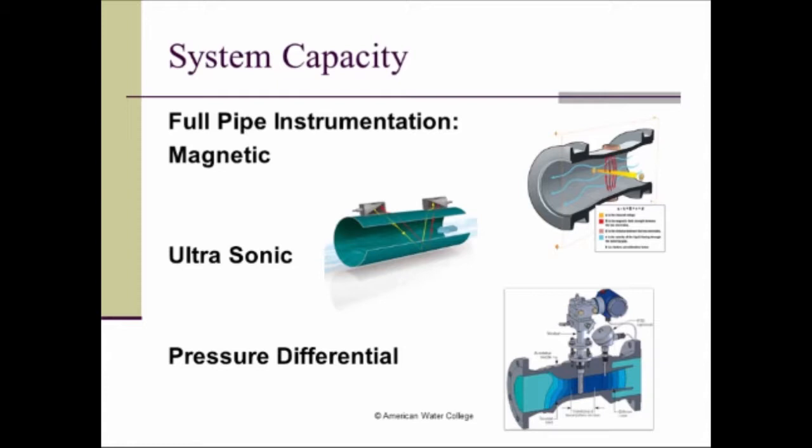And then the pressure differential, basically, they choke down the pipe, either through a venturi or some type of orifice, and the difference in pressure from the neck of the pipe or the throat at the smallest point, and the pressure upstream, that difference in pressure can be related to flow as well. So for full pipe instrumentation, we've got mag meters, or it uses magnetism. We have ultrasonic meters, and then we have differential pressure meters.